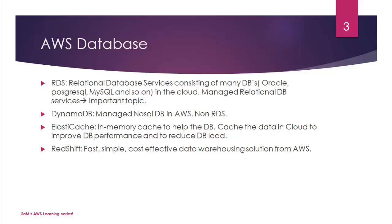RDS stands for Relational Database Service. Amazon offers many databases under it — Oracle, PostgreSQL, MySQL, and so on. They also have something called Aurora, which is their own database service. All these offerings are clubbed under RDS, and it is the managed relational database service in the AWS cloud.